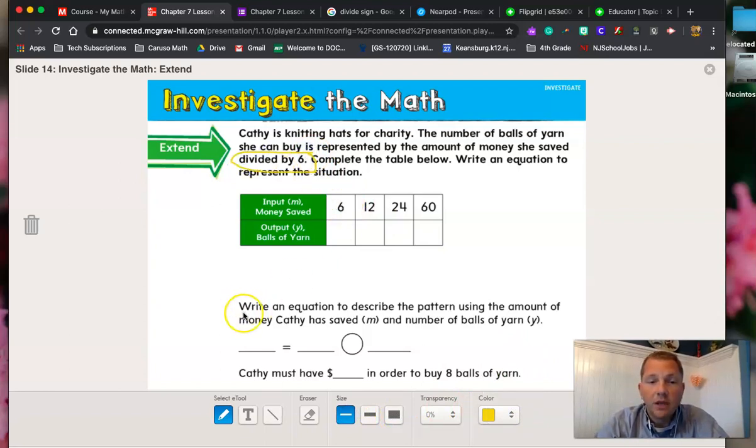Alright, so let's look at this. If this is telling us that our equation here is going to be y, which is our output, equals m, which is our input, divided by, and then what did it tell us that the number is going to be? It told us it's going to be six.